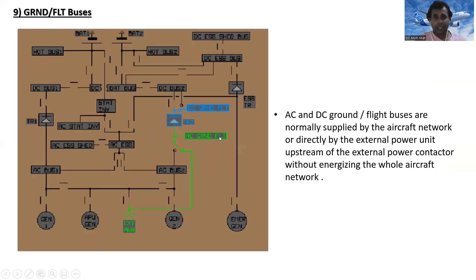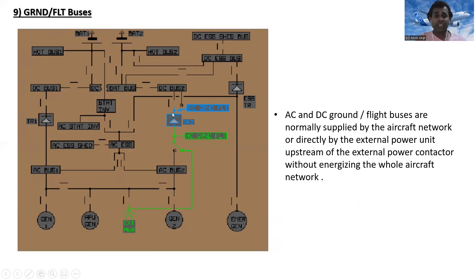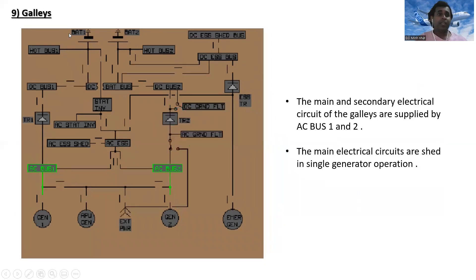The AC and DC ground flight buses are normally supplied by the aircraft network or directly by the external power unit upstream of the external power contactor, without energizing the whole aircraft network. This means the AC or DC ground flight buses can be energized from external power only, without powering the whole aircraft network.